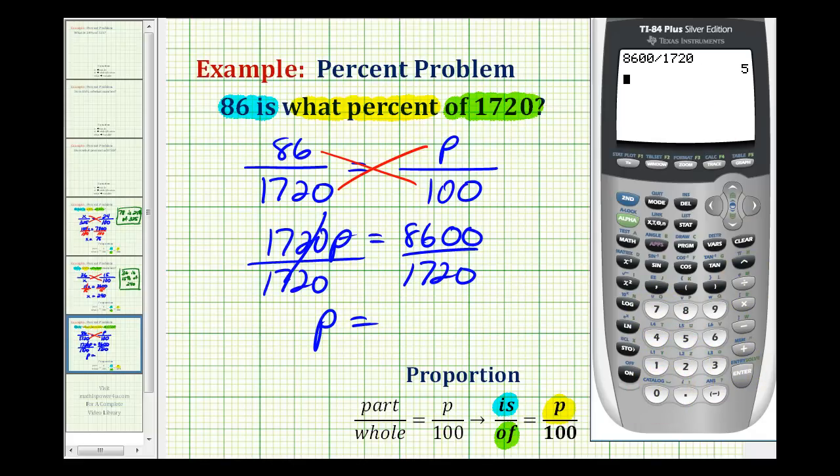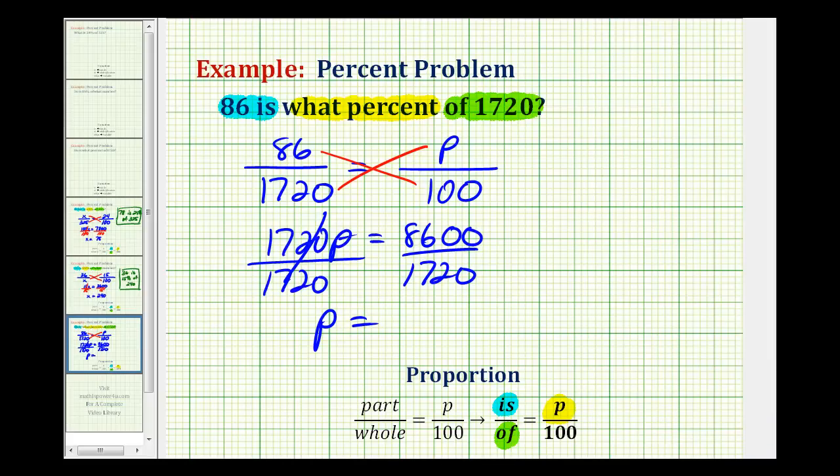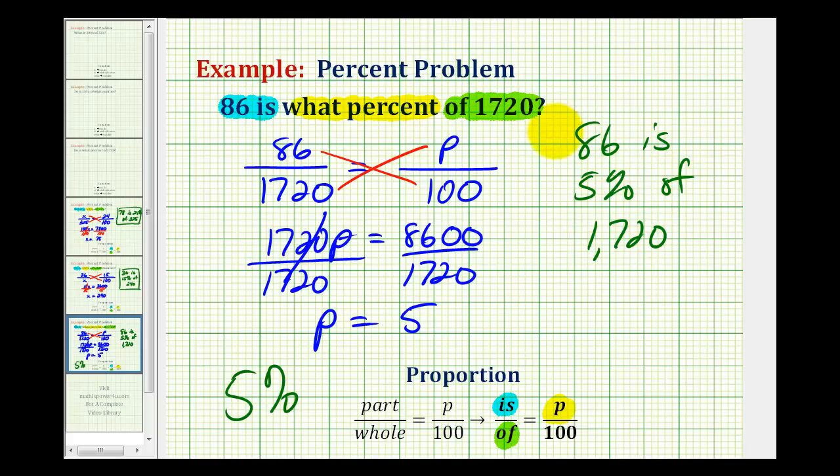So p is equal to 5. So if p is equal to 5, we would have 5 over 100, which means the percentage would be 5%. So we found that 86 is 5% of 1720 using the percent proportion.